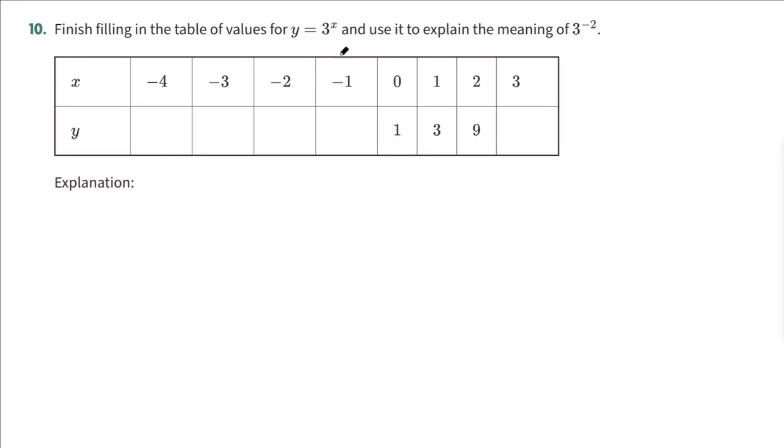In our table here, we have our function 3 to the x, y equals 3 to the x, and of course we're multiplying by 3 each time, so multiplying 9 by 3 gives us 27.